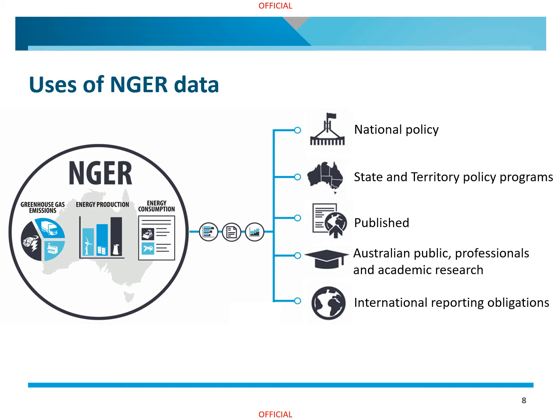NGER data also importantly contributes to other Australian government programs that are responsible for international reporting obligations. NGER collects roughly 60% of emissions data that feeds into Australia's national greenhouse accounts, fulfilling reporting commitments for the United Nations Framework Convention on Climate Change, the Kyoto Protocol and the Paris Agreement. We are also responsible for collecting approximately 80% of Australia's energy data for the Australian Energy Statistics and Australian Petroleum Statistics programs that report to the International Energy Agency.